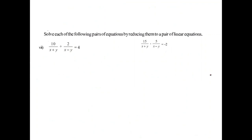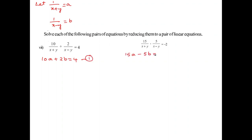For the next problem, we use the same approach. Let 1 by x plus y equals A and 1 by x minus y equals B. Substituting into the equations gives equation 1 and equation 2. Multiplying equation 1 by 3 gives 6A plus 6B equals 12, and multiplying equation 2 by 2 gives a second equation.